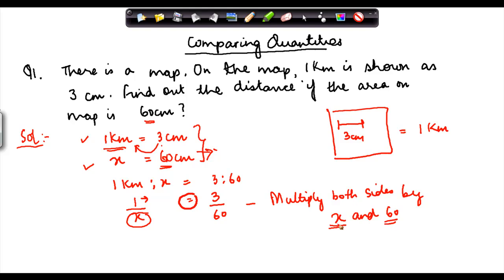The reason for doing this is I want to eliminate x from here and I want to eliminate 60 from here. So in order to do that, to remove this x and to remove this 60, I will multiply both these sides by x and by 60. So what do I get? I get 1 divided by x into x into 60, and here I get 3 divided by 60 into 60 into x. So I have multiplied both sides by x and by 60.